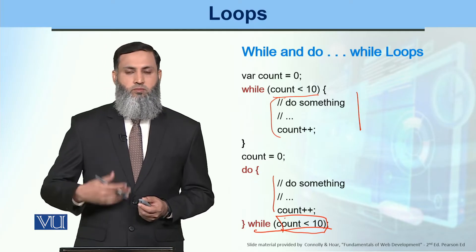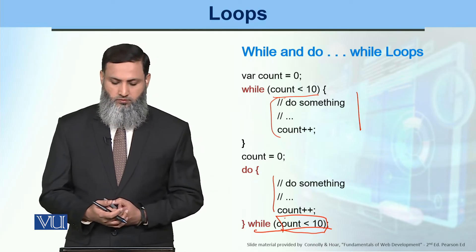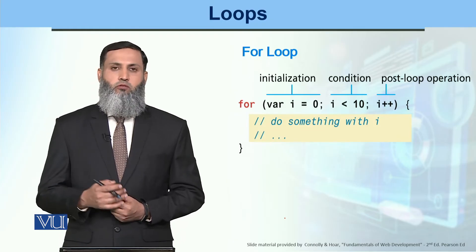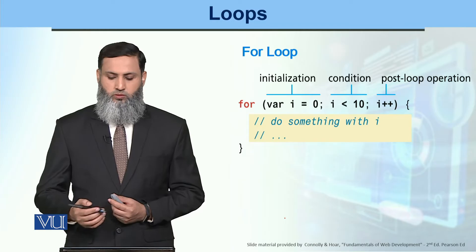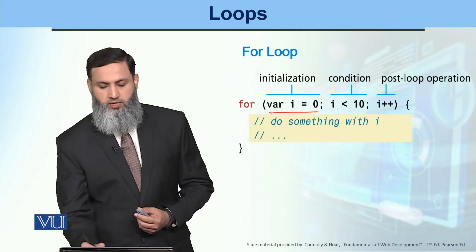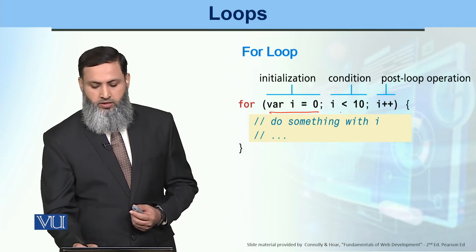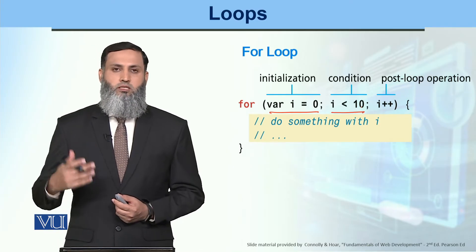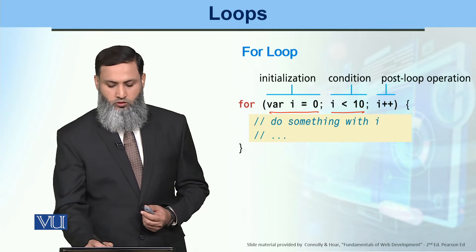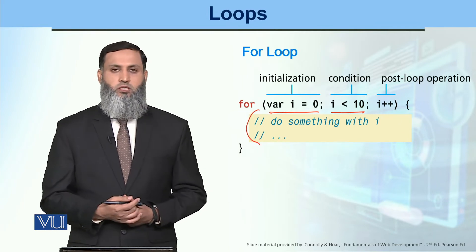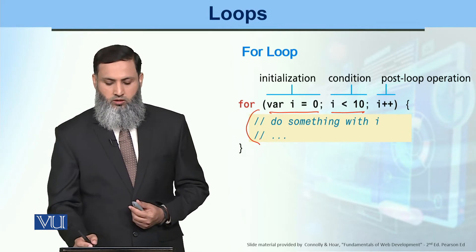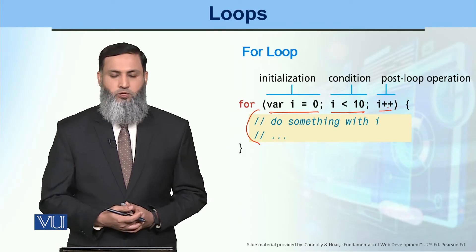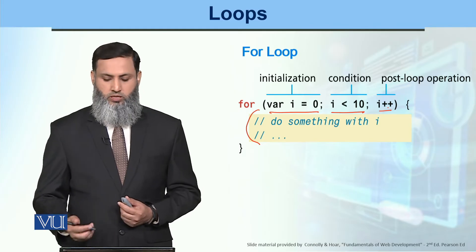For the for loop: first we have an initialization statement for a variable, then we check the condition — if the condition is true then we execute a set of statements, and after the set of statements execute, post-loop operations are executed.